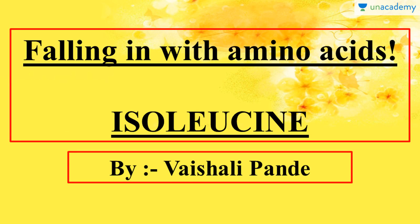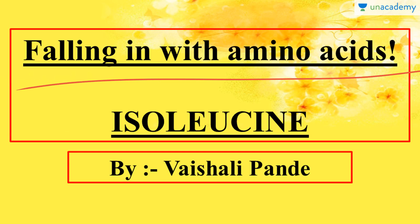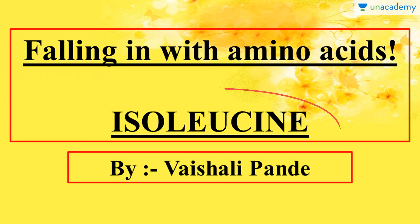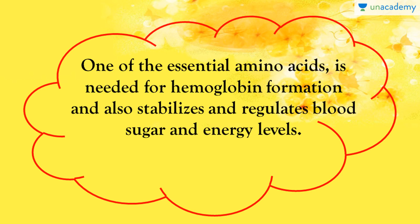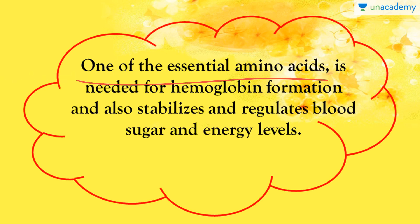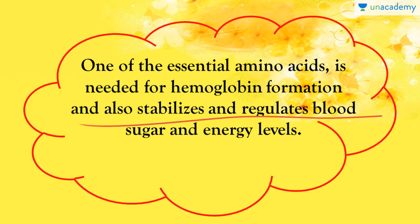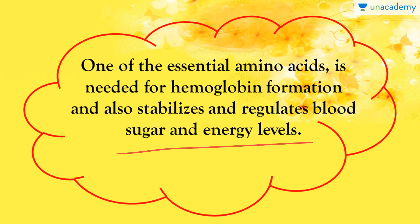Hello everyone, I am Vishali and in this lesson from my course Falling In with Amino Acids, I am going to talk about one of the 20 standard amino acids which is isoleucine. Isoleucine is one of the essential amino acids which is needed for hemoglobin formation, and it also stabilizes and regulates blood sugar and energy levels. It is one of the most important amino acids regarding hemoglobin and blood circulation homeostasis inside our body.